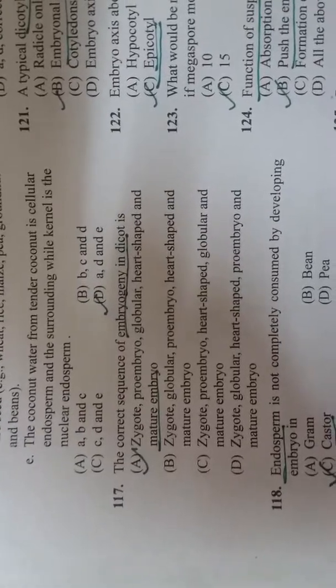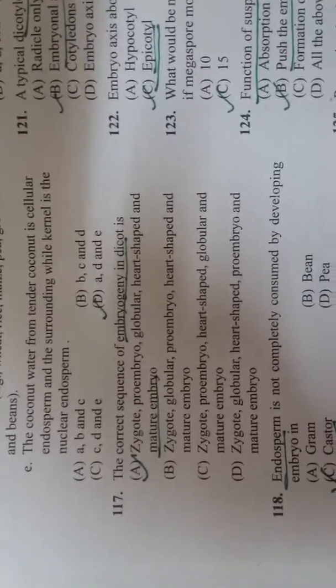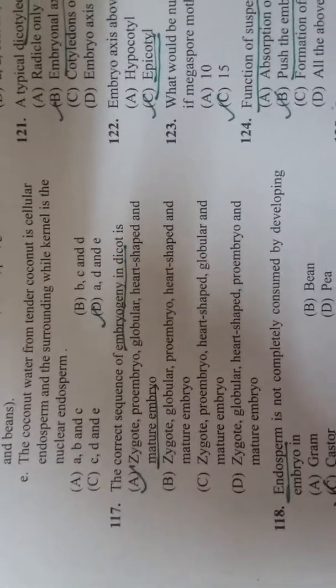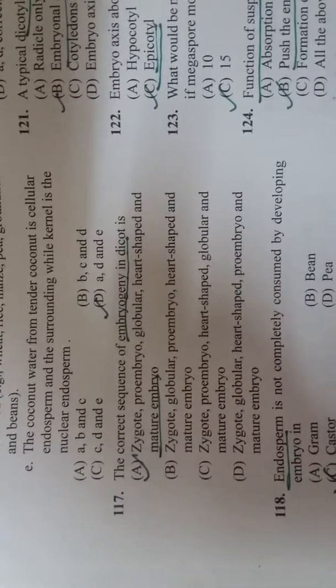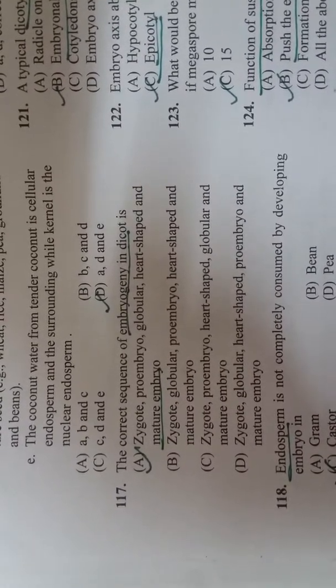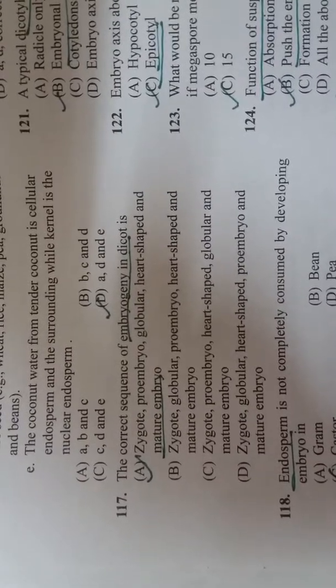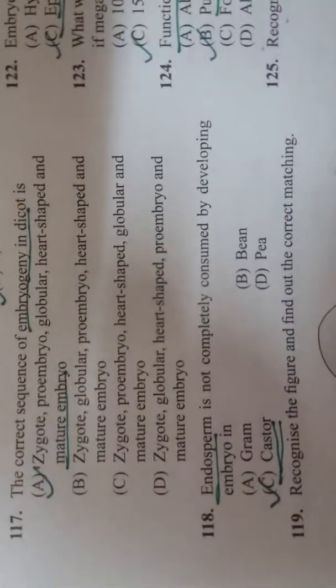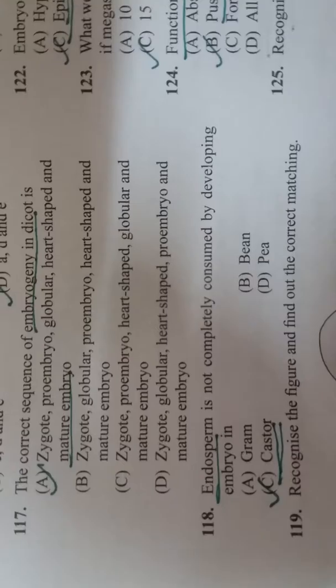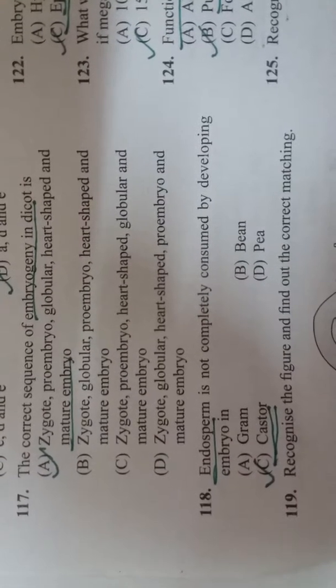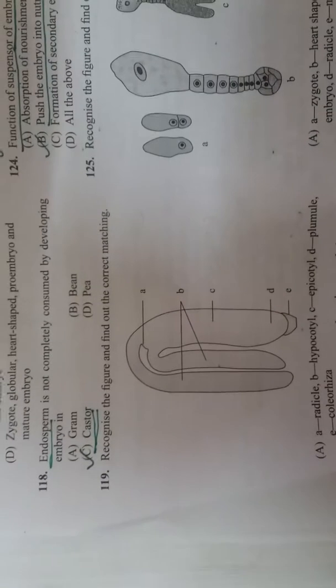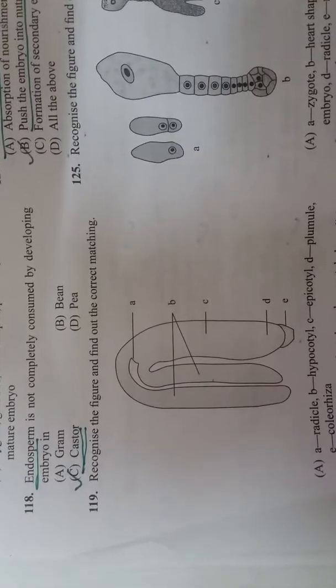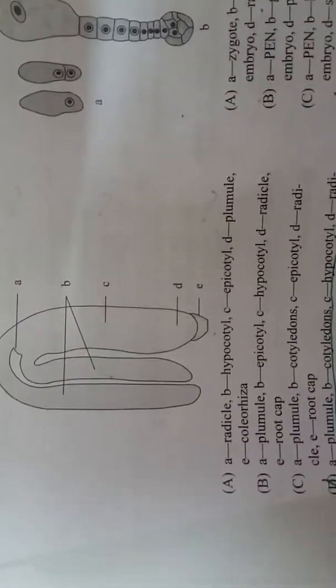The correct sequence of embryogeny is: zygote, proembryo, globular, heart-shaped, and mature embryo. Endosperm is not completely consumed by developing embryo in castor. Recognize the figure and find out the correct matching.